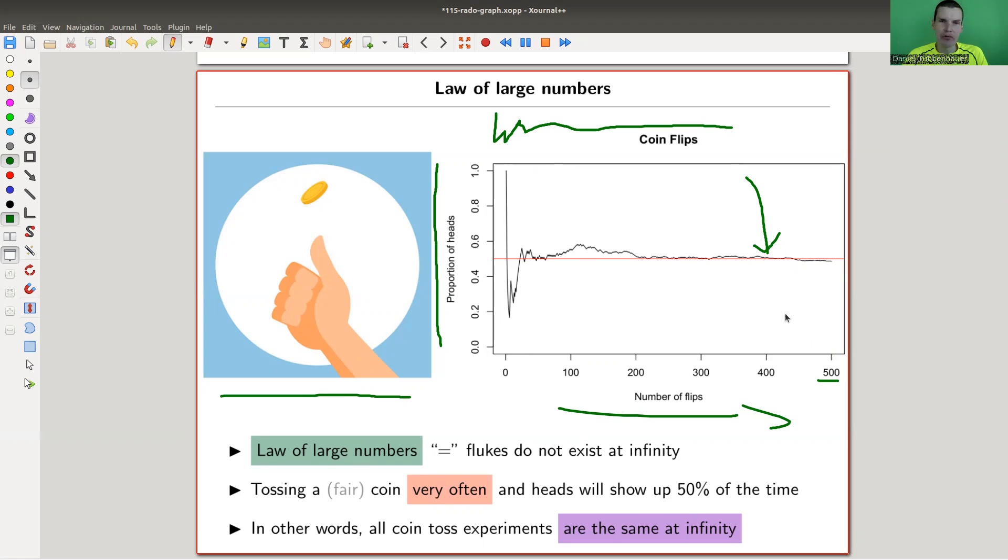Not quite obvious that this should be true in kind of a mathematical generality, but it is, and that's called the law of large numbers. In some sense, let's think about it as follows: coincidences don't exist at infinity. If you just repeat something often enough, it will come out as the average, if you want. So luck doesn't exist at infinity, whatever that means. In this case, if you repeat coin flips often enough, then heads comes up 50%, tails comes up 50%.